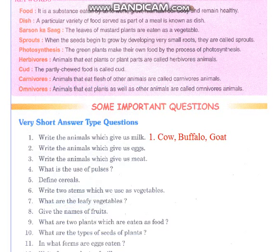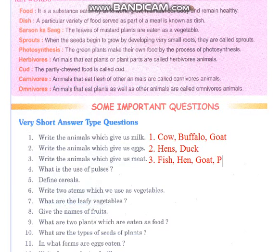Then second: write the animals which give us eggs — hen, duck. Write the animals which give us meat — animals that give us meat: fish, hen, goat, prawns. You can write any such names.